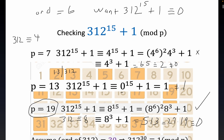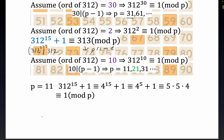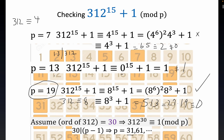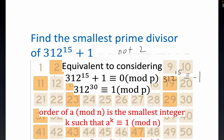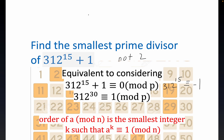Our answer is p = 19. It is the smallest prime divisor. We've exhaustively gone through every case — the order that got the job done was 6, and p = 19 is the smallest prime divisor of 312 to the 15th plus 1. Thanks for viewing.